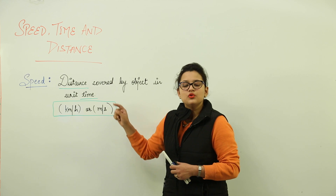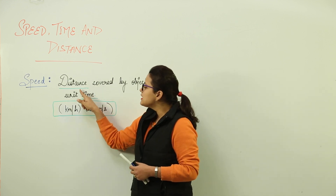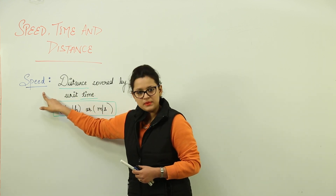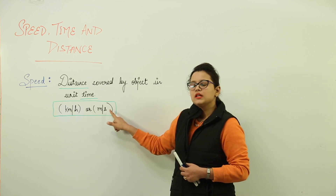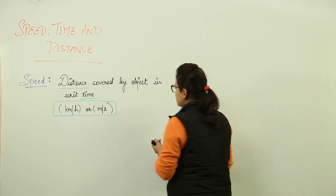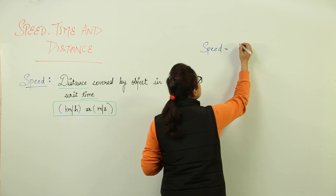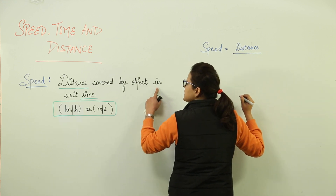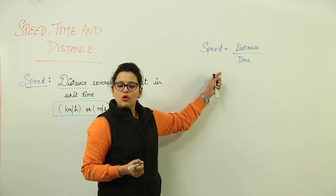What do you mean by unit over here? Unit means one. That means it could be one second, one minute, one hour, and so on. So the distance covered by any object in unit time is referred to as speed. Now speed is measured in these units — kilometer per hour or meter per second. Based on the definition, let us derive the formula of speed. The formula for speed would be distance covered by object in unit time — that is, distance travelled per unit time.